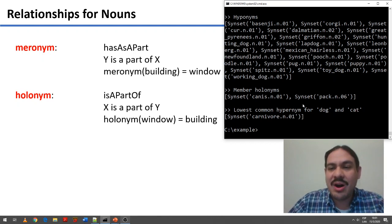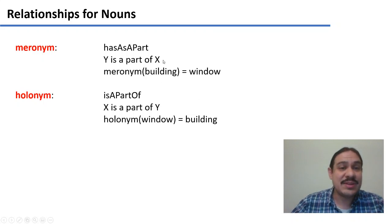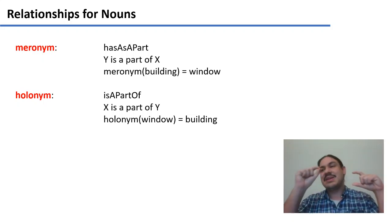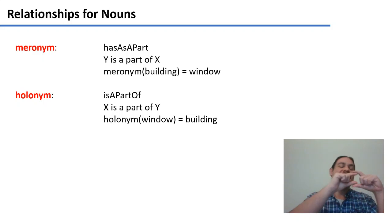As you can see in our example here, a dog is a part of a pack. It is a member of a pack. The contrary for this relationship is a meronym, which is something that has a word as a part. So, a part of a building is a window. A part of a building could be a door, for example. These are meronyms of building.